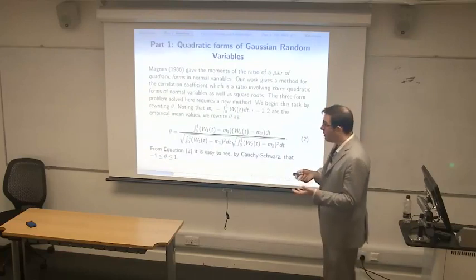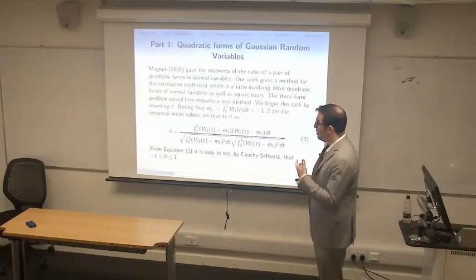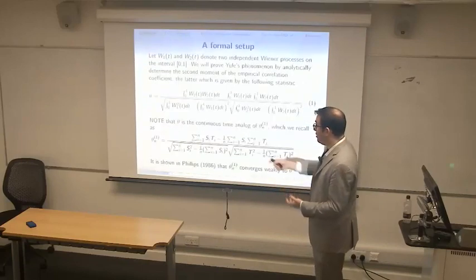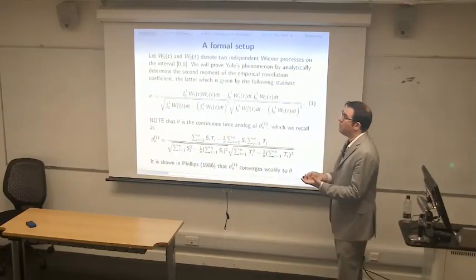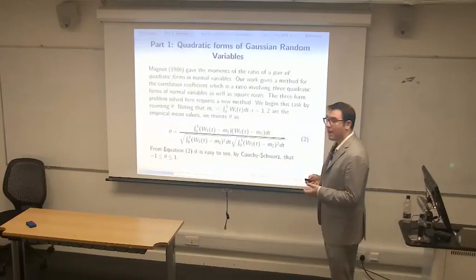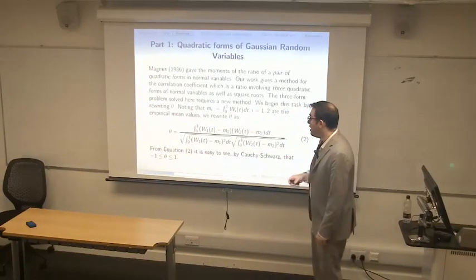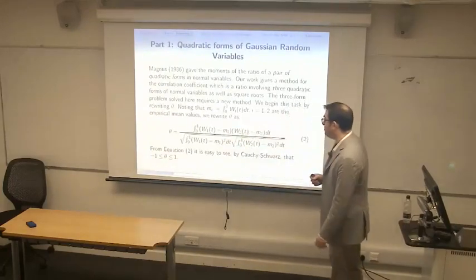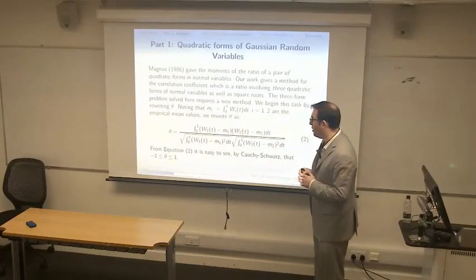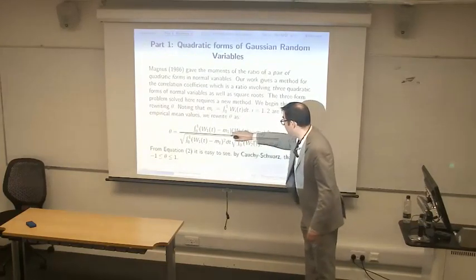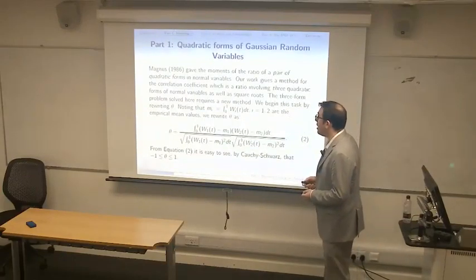First, does theta make sense as empirical correlation? Phillips has shown theta_N^1 converges in law to theta. Letting M_i be the integral from 0 to 1 of W_i(t) dt, we can rewrite theta in terms of it. Equation 2 makes it easy to understand that theta must be bounded between negative 1 and 1 by Cauchy-Schwarz — we have the inner product and the norm of each — and therefore theta is bounded by negative 1 and 1.